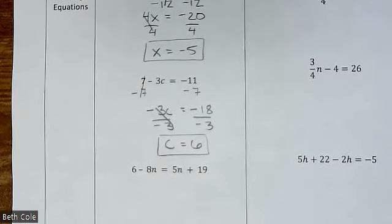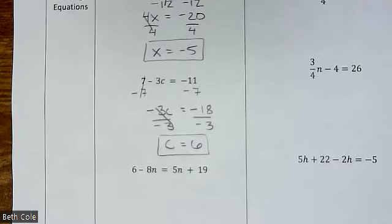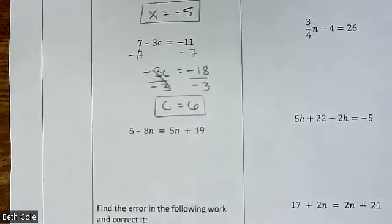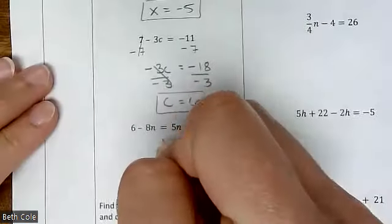You know what, that bothers you guys more than me. If you're awake and talking to me, I'm happy. Again, on the test you'll be allowed a calculator. All right, this one has a variable on both sides, so first step is minus 5n, minus 5n.